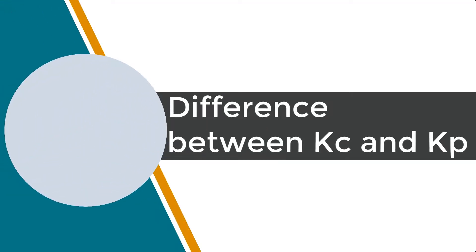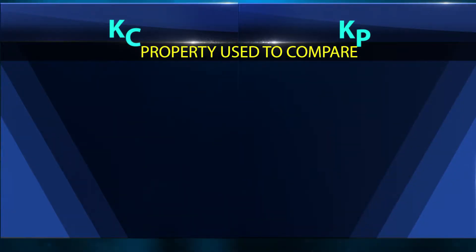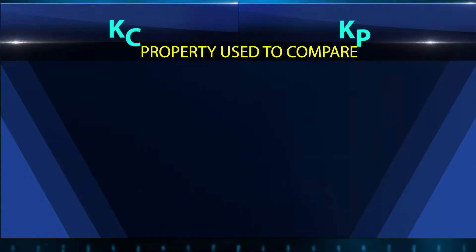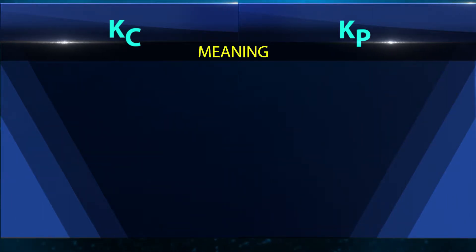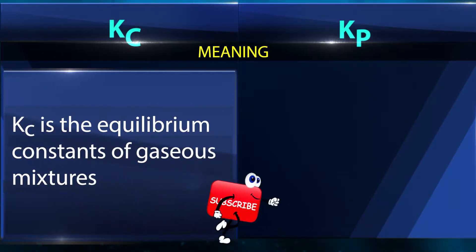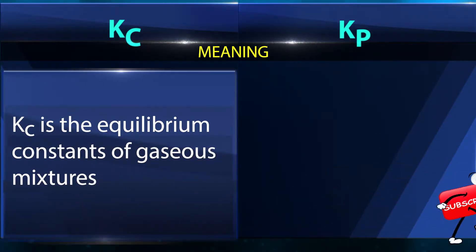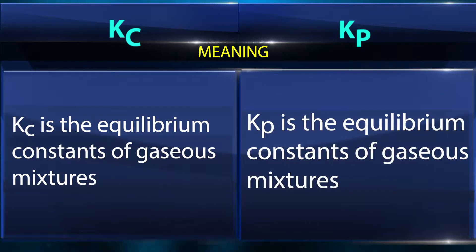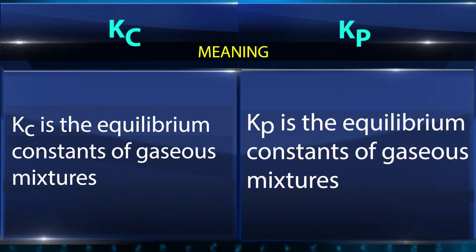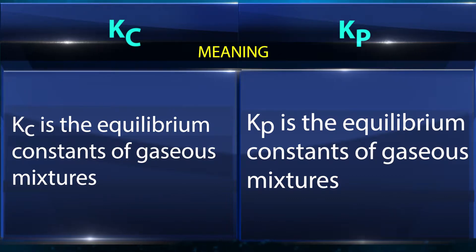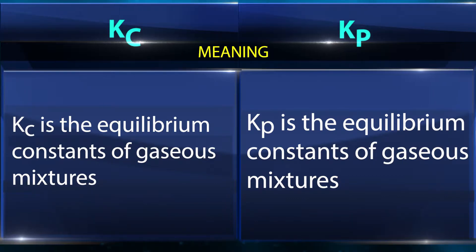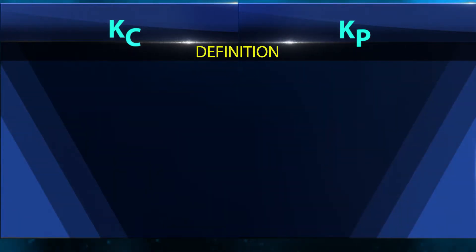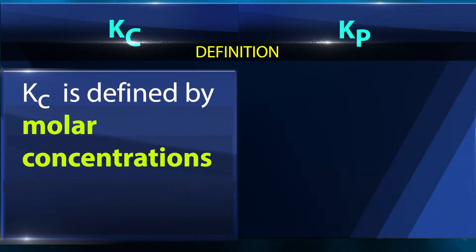Difference between Kc and Kp. Kc is an equilibrium constant which is dependent on the concentrations of reactants and products. Kp is an equilibrium constant which is dependent on the partial pressures exerted by the gaseous components.